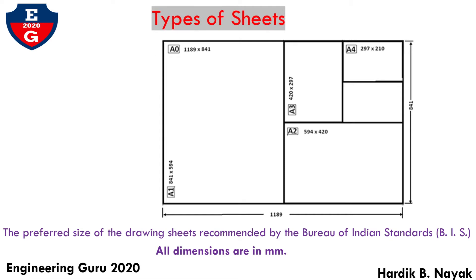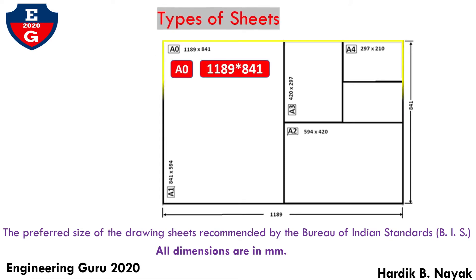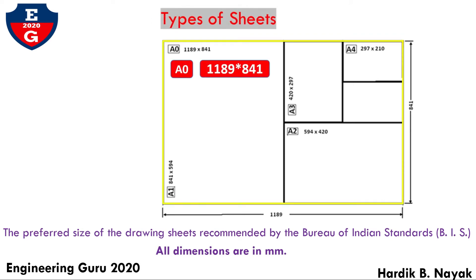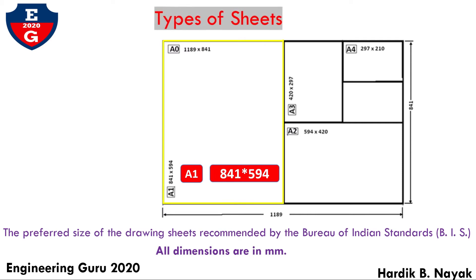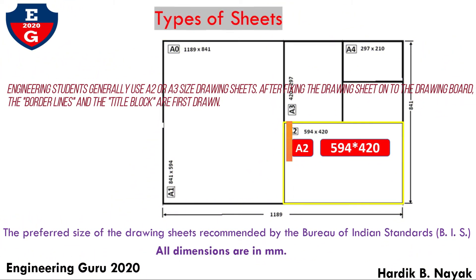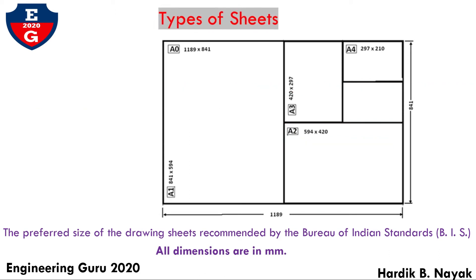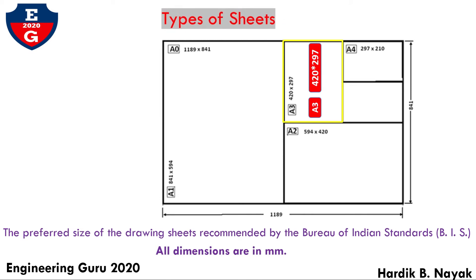First, A0 size: length 1189 mm and width 841 mm. You can see on the screen by yellow line. Second, A1 size: length 841 mm and width 594 mm. Third, A2 size: length 594 mm and width 420 mm. Fourth, A3 size: length 420 mm and width 297 mm.